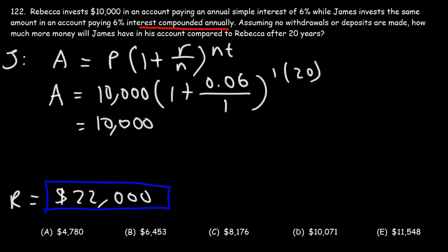So this becomes $10,000 times 1.06 raised to the 20th power. Notice the difference of what's happening. Rebecca, every year, is receiving $600 in interest. However, James in his first year is also going to receive $600 in interest. But in his second year, he's going to earn 6% on his $10,000 plus the $600 already in his account. Rebecca is only earning 6% each year on the $10,000 — on the principal only.